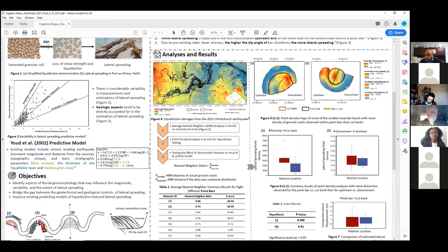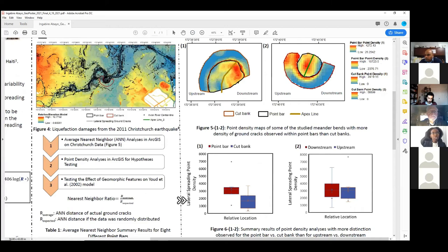Based on the data we have available to us through the New Zealand Geotechnical Database around the Avon River, which as we can see here is also a meandering river here in figure 4, we were able to test the first two hypotheses using the observed ground cracks after the Christchurch New Zealand earthquake in 2011. First, we used the average nearest neighbor statistical tool, which helped us check whether these ground cracks were randomly distributed or not. And I'll be happy to discuss more on this later. But after we confirmed that the distribution of these cracks is non-random, we wanted to go further and assess whether geomorphic factors explain the non-random distribution based on the hypothesis we just discussed.